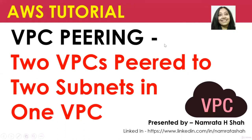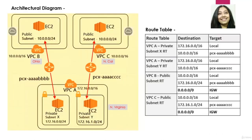Hello all and welcome to this AWS tutorial on VPC Peering. Today we will see how we can peer two VPCs — and two subnets in one VPC. Before we jump into the demo, let us review the architectural diagram and the route table. As you see, we have three VPCs: VPC A with CIDR block 172.16.0.0/16.